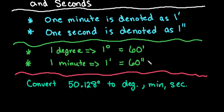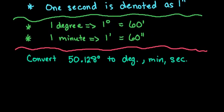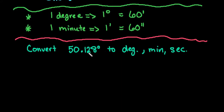So this is what we're going to use right here to help us do our conversions. We're going to convert 50.128 degrees to degrees, minutes, and seconds. I will also do a video showing you how to do this with both the TI Inspire graphing calculator and the TI-84 graphing calculator.